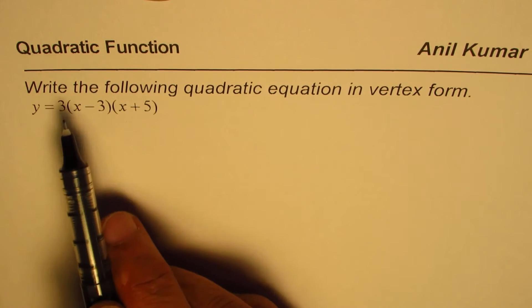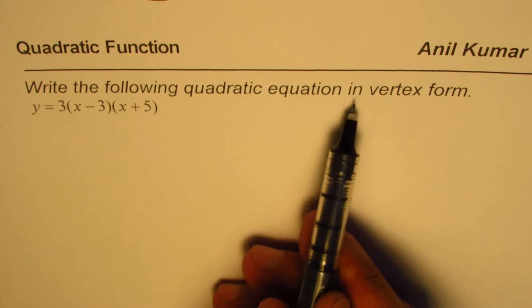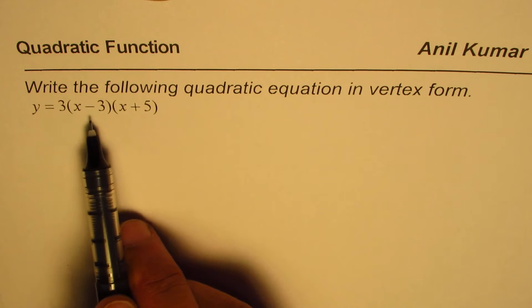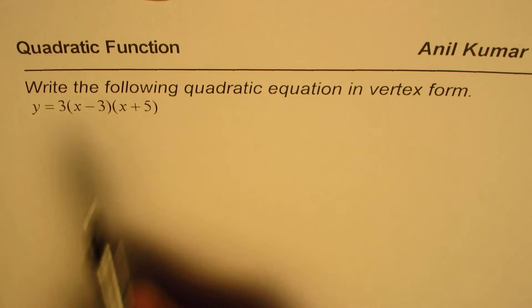The question here is write the following quadratic equation in vertex form. The equation is y equals 3 times x minus 3 times x plus 5.